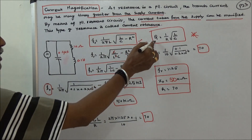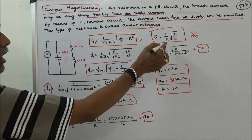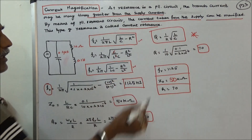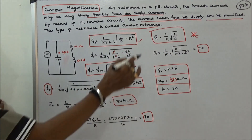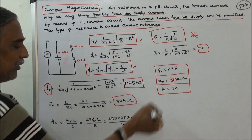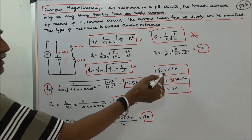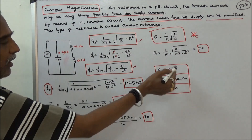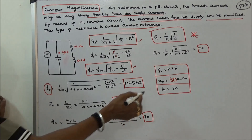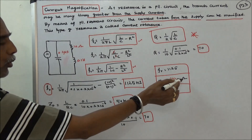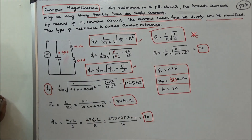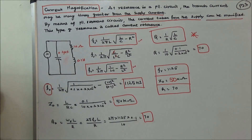Alternatively, quality factor Q₀ equals (1/R)·√(L/C). Substituting all values again gives the same result of 70. Therefore, the resonant frequency is 1,125 hertz, dynamic impedance is 50 kilo-ohms, and quality factor is 70. This concludes the problem and the lecture. Thanks for listening.